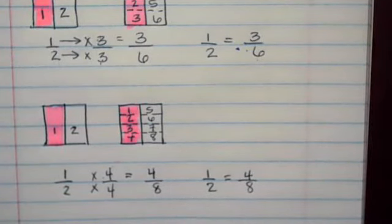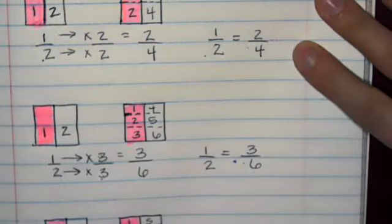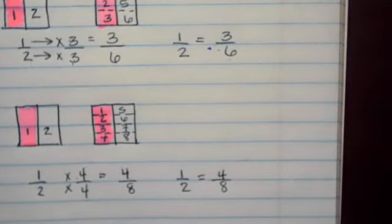These are all equivalent fractions of one half. One half is equivalent to two fourths, is equivalent to three sixths, is equivalent to four eighths.